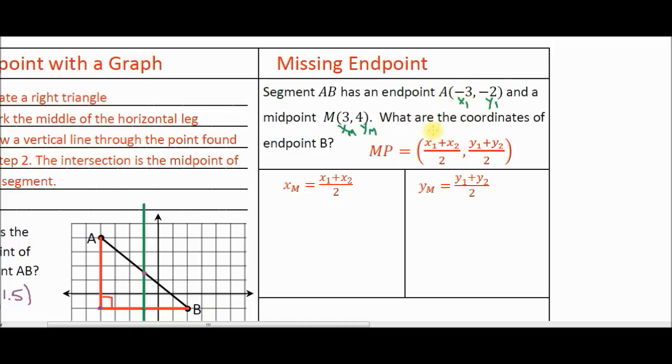So notice we know x sub 1 in our formula. We know y sub 1. We know the x value and the y value of the midpoint. What we don't know is x sub 2 and y sub 2. Those are the coordinates of the B endpoint or the endpoint labeled B.